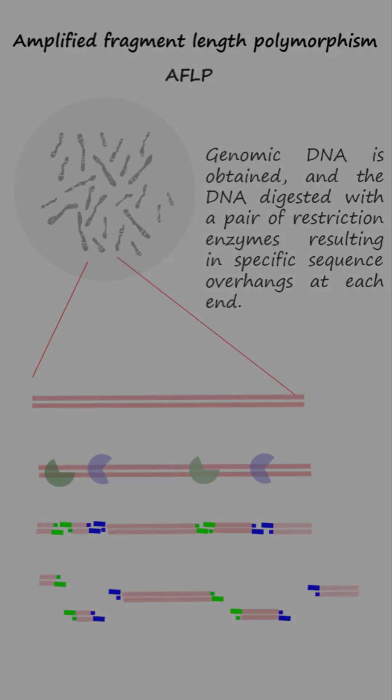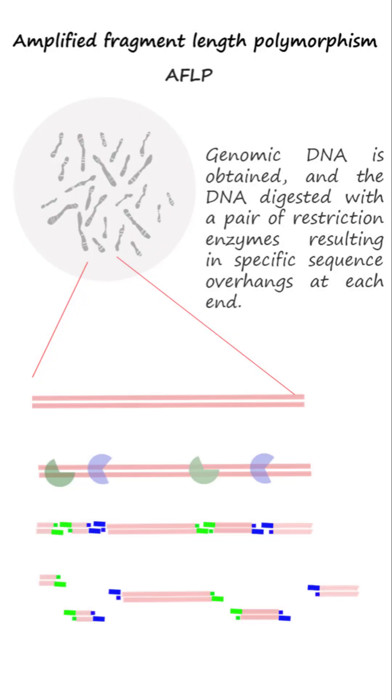In AFLP analysis, genomic DNA is digested using two restriction enzymes, such as MSc1 and EcoR1.